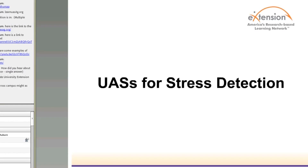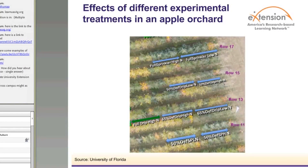Monitoring stress signatures due to the presence of stress-causing factors such as water, disease, and soil is an important application area of unmanned aircraft. In the case of apple, which is an important fruit crop commercially produced in 32 states in the country, water management is very important, similar to field crops. There is an interesting study using unmanned aircraft systems for studying visual symptoms exhibited by apple trees under a variety of deficit irrigation regimes.